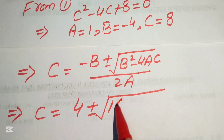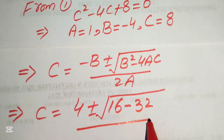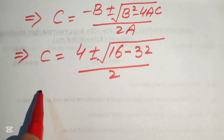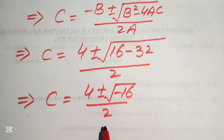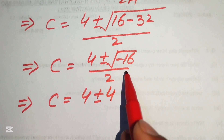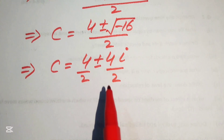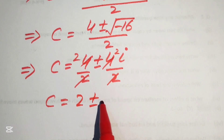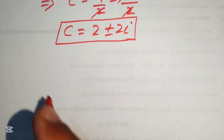Substituting: minus b gives plus 4, b squared is 16, and 4 times 1 times 8 is 32, divided by 2 times 1 equals 2. This simplifies to c equals 4 plus or minus square root of minus 16, divided by 2. The square root of 16 is 4 and square root of minus 1 is iota, giving 4 plus or minus 4i over 2. Breaking the fraction, the first two complex roots are 2 plus or minus 2i.